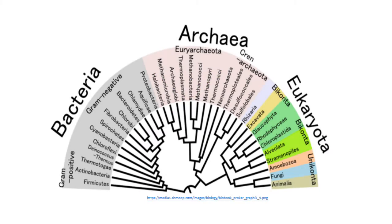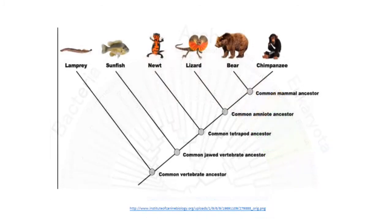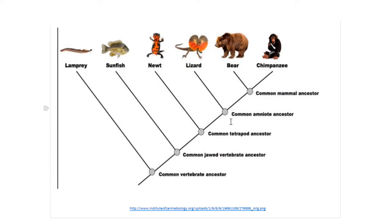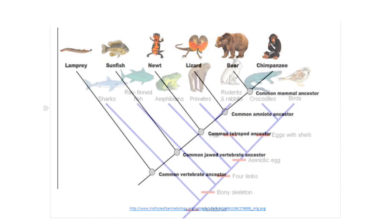Cladograms can be a lot more complicated. But what do cladograms actually show? This shows the last common ancestor between two species. We go back in time more to find the common ancestor of these three species, or this branch, or clade, and this species.